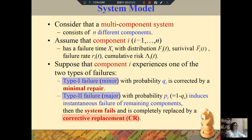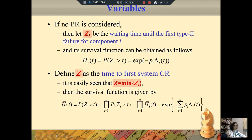In this slide, we define the variables in our model. If PR is considered, let Zi be the waiting time until the first type-II failure for component i, and its survival function can be obtained as follows: H̄i(t). Please refer to it. We define Z as the time to the first system CR. It is easy to see that Z equals the minimum of the Zi. Then the survival function is given by H̄(t) like this equation.